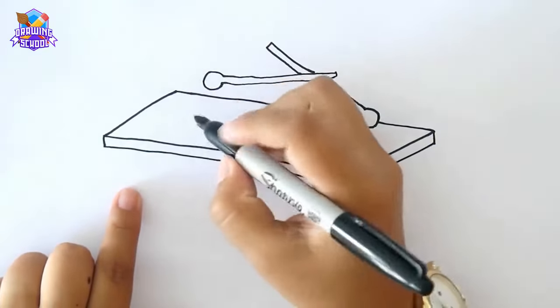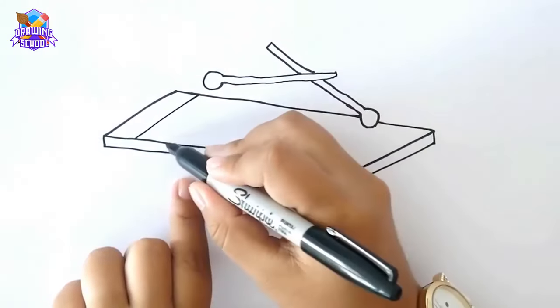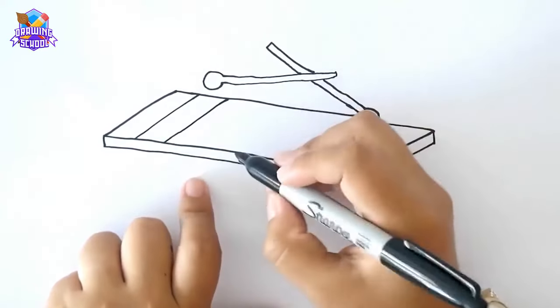Once we have this done, we're going to draw some inclined lines inside it, like this, one next to the other.